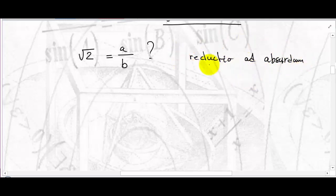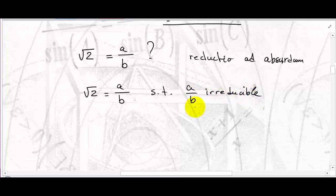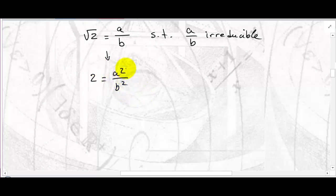Reductio ad absurdum means you reduce your argument to an absurdity. The core of this type of proof is that you assume your conclusion is not true. So I'm going to assume that I can find A over B whose ratio is equal to root two, such that A over B is irreducible. Now, squaring both sides gives 2 equals A squared over B squared, so 2B squared equals A squared.